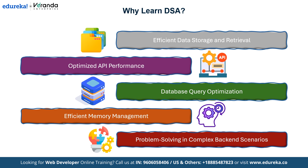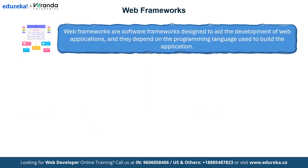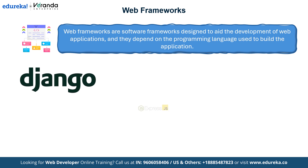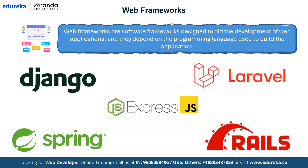With DSA covered, the next step is mastering web frameworks. Web frameworks are tools that help developers build web applications more easily. They provide a structure to organize code and save time by offering pre-built solutions for common tasks. The framework you choose depends on the programming language you use. Popular web frameworks include Django for Python, Express for Node.js, Ruby on Rails for Ruby, Laravel for PHP and Spring for Java. These frameworks make the development process faster and more efficient.